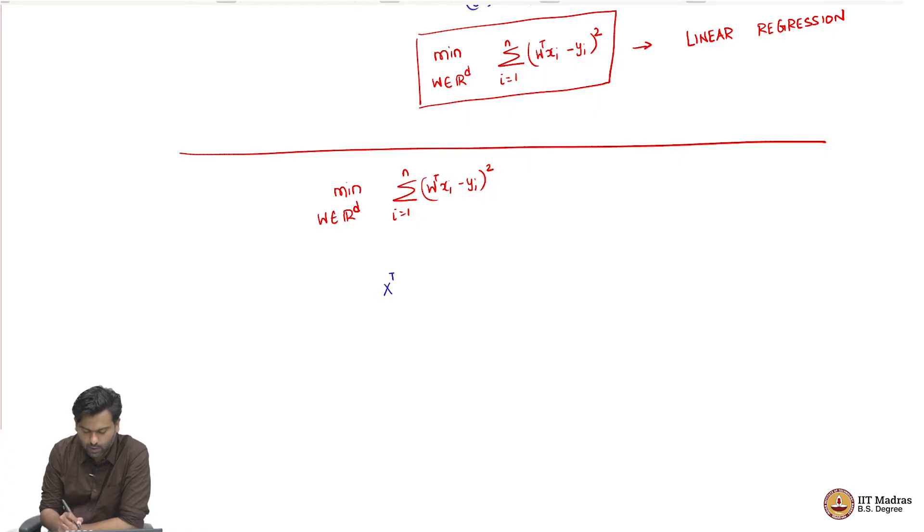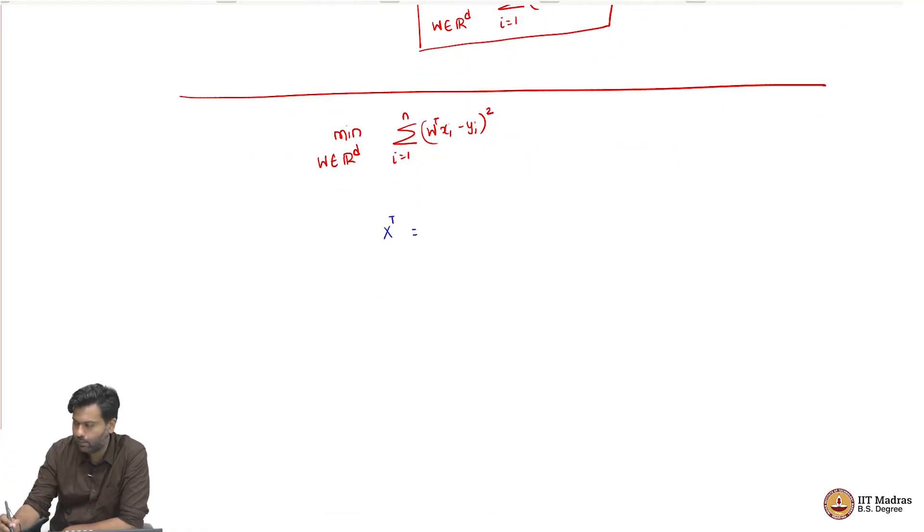Think of a matrix X as just the matrix where the data points are stacked in columns. In other words, X transpose is a matrix where the data points are stacked in rows: X1, X2, dot dot dot Xn. We have n different data points. Now, we also have the label vector Y. This is an n cross d matrix. We have a label vector Y which gives the labels for each of our data points. This is an n cross 1 vector.